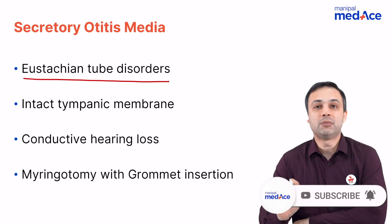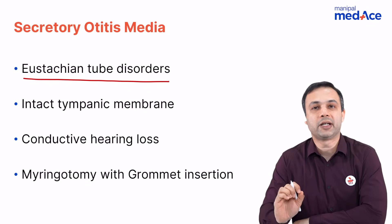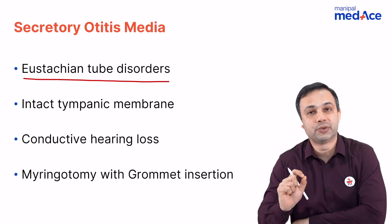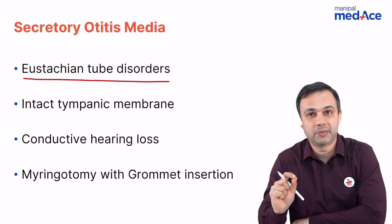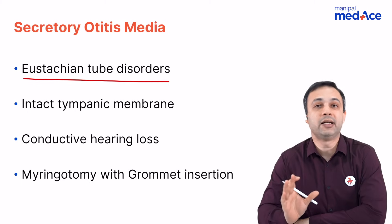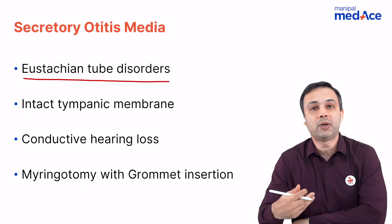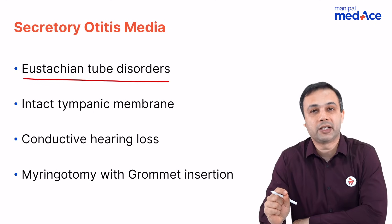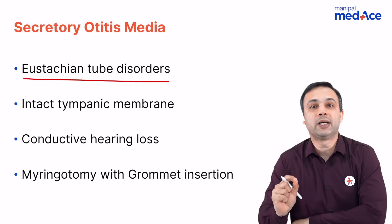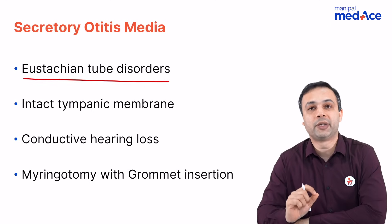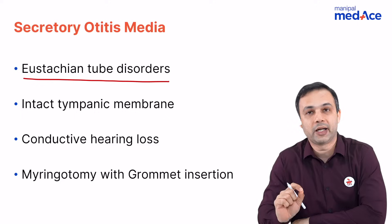What are the most common causes of secretory otitis media? In children, adenoid enlargement is the most common cause, and this most often presents as bilateral. When talking about adults presenting with unilateral secretory otitis media, you need to do a diagnostic nasal endoscopy, because nasopharyngeal carcinoma blocking the eustachian tube can produce secretory otitis media.